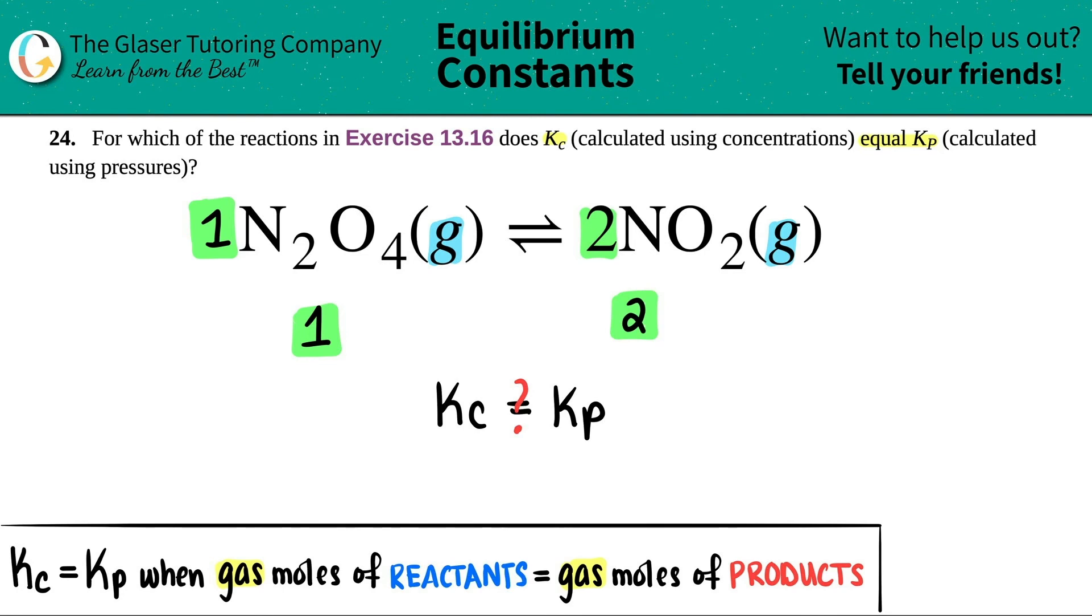And now let's see. One does not equal two. So does the Kc equal the Kp? No, it doesn't, because those numbers are not the same. They do not equal each other. And that answers the question.